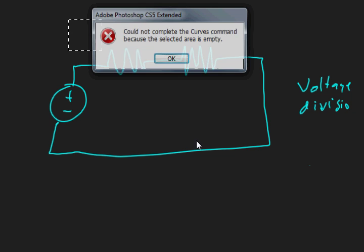Let's make up some values and solve a problem using voltage division. Say we had 5 volts here, 2 ohms on this resistor, and 3 ohms on that resistor. We know from the previous video that the total is going to be 5 ohms.